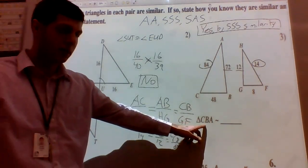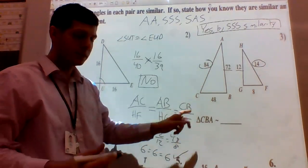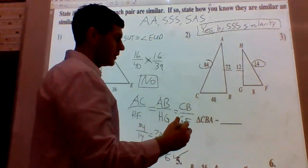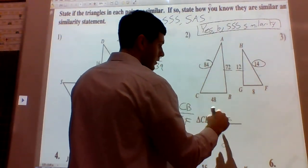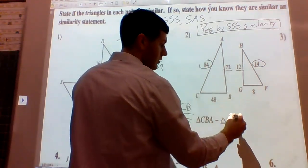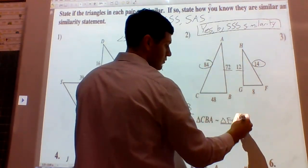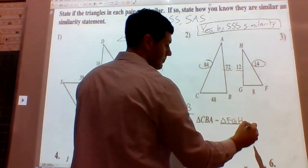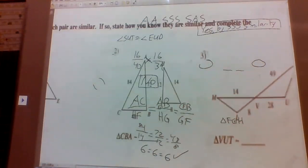We want to finish our similarity statement. So C corresponds with F, B corresponds with G, and A corresponds with H. So triangle CBA is similar to triangle FGH.